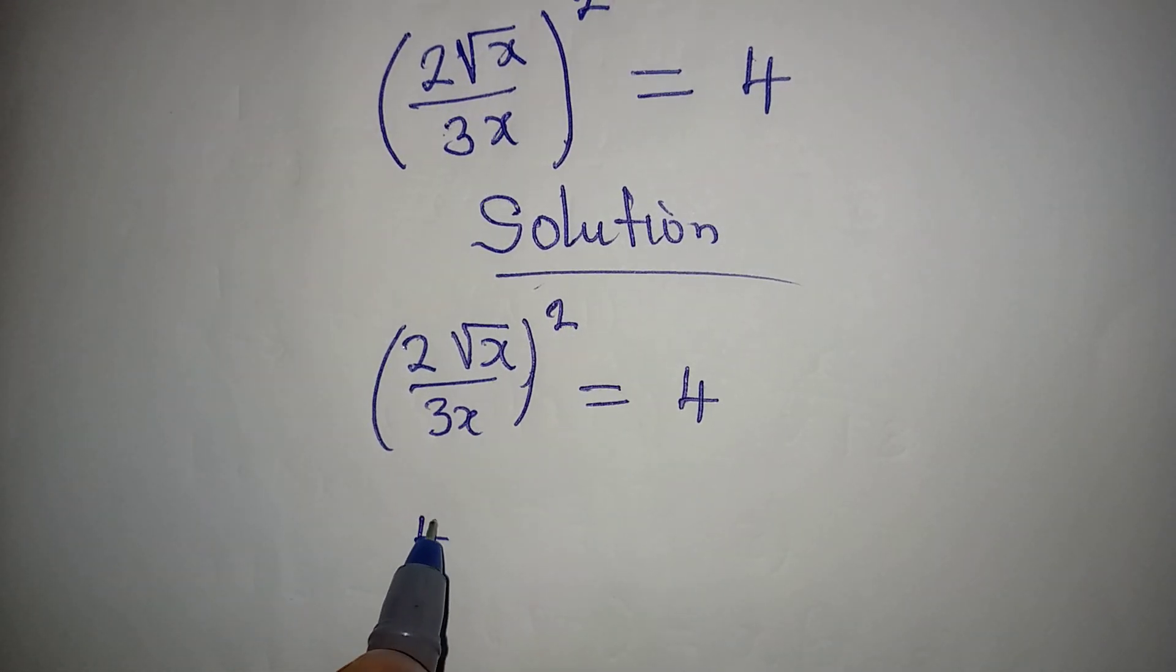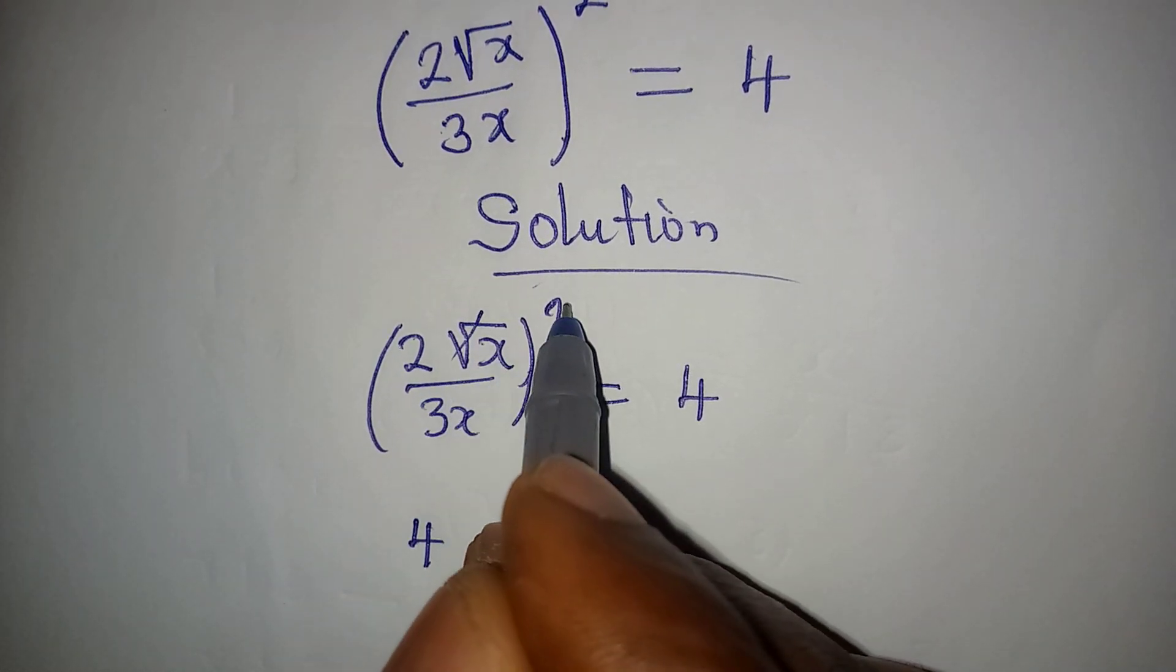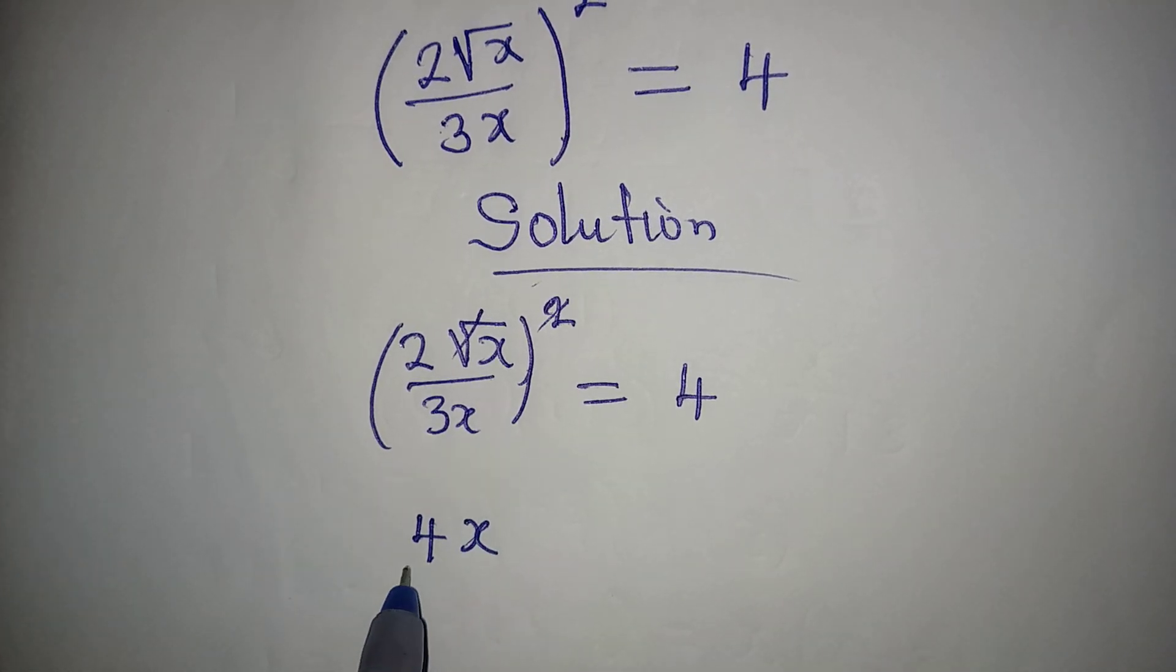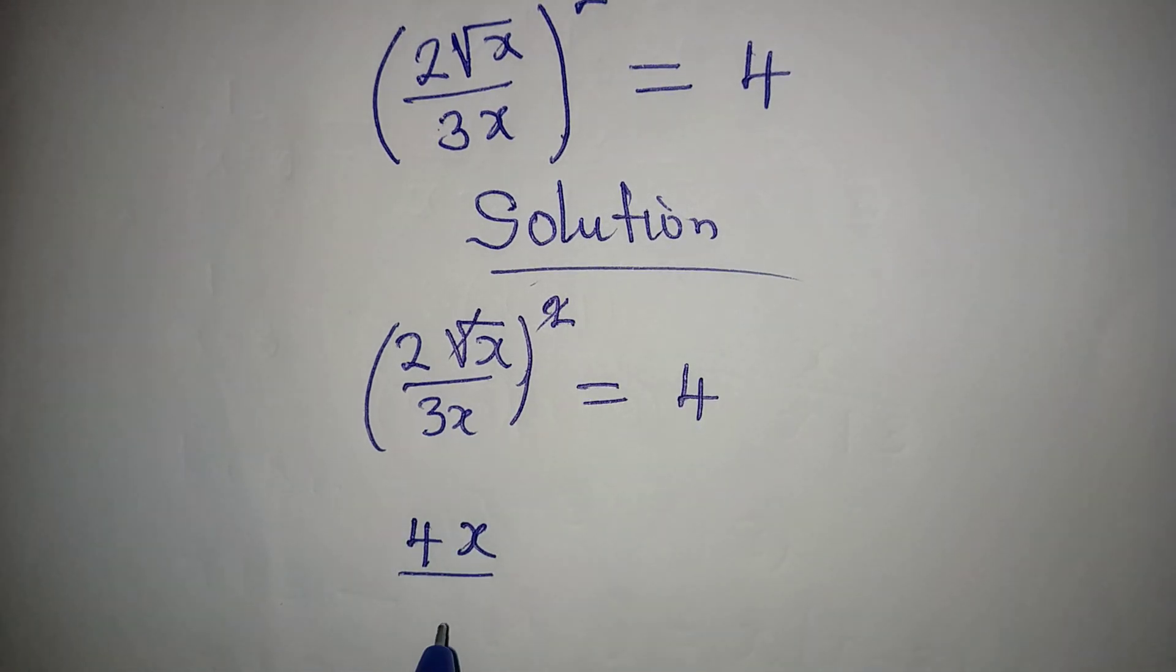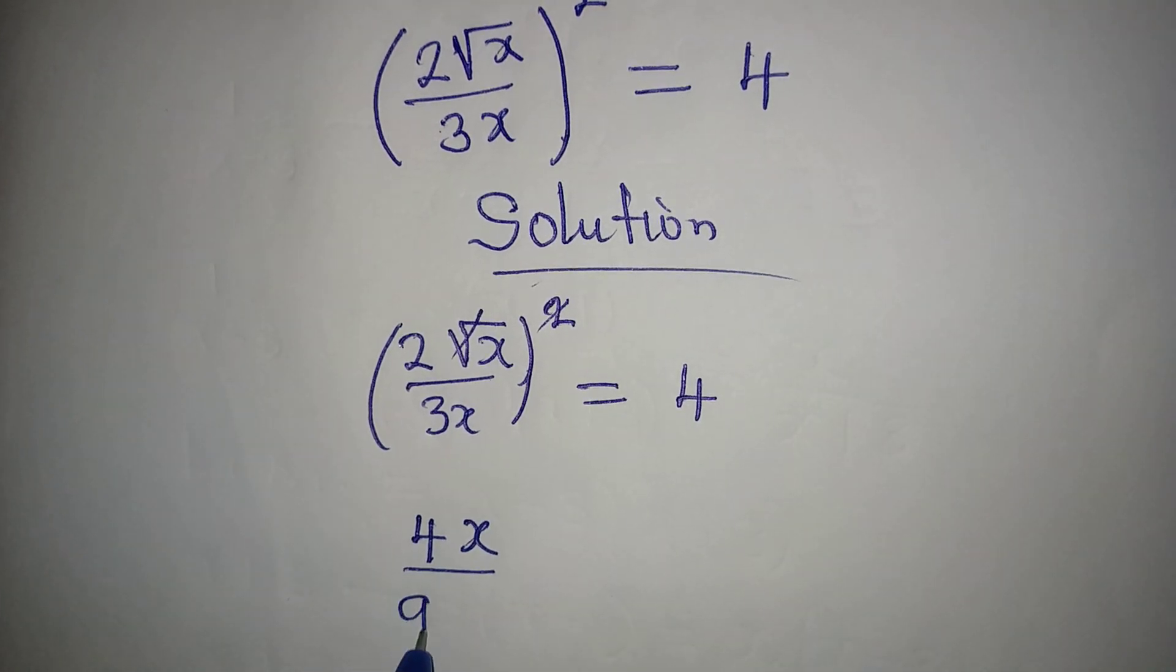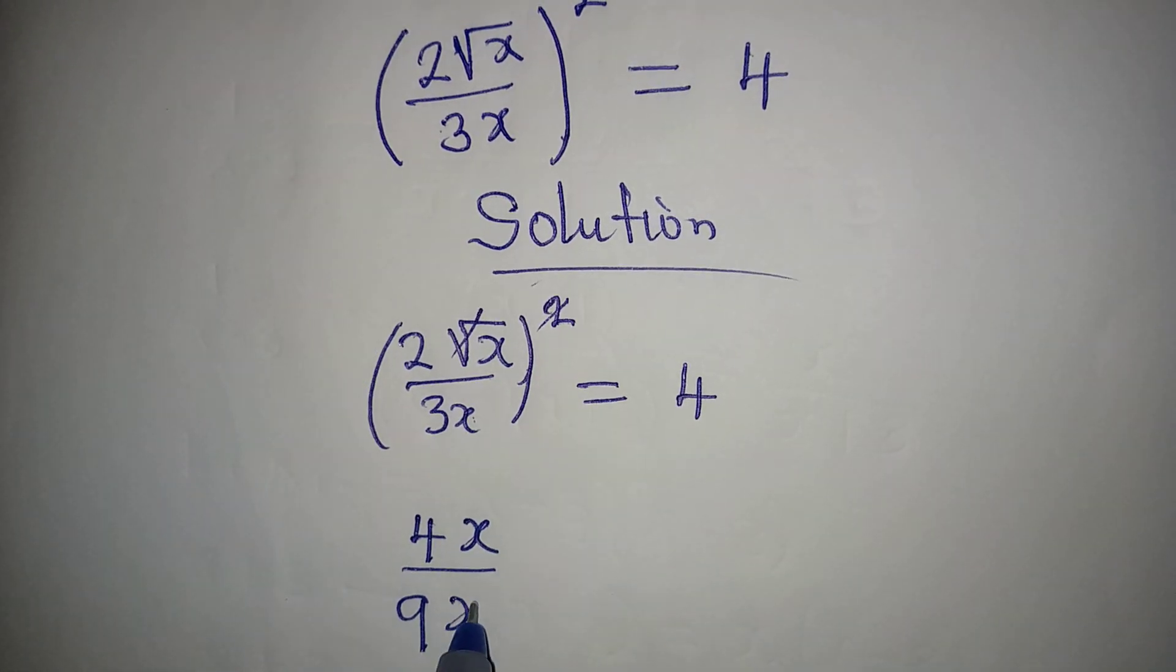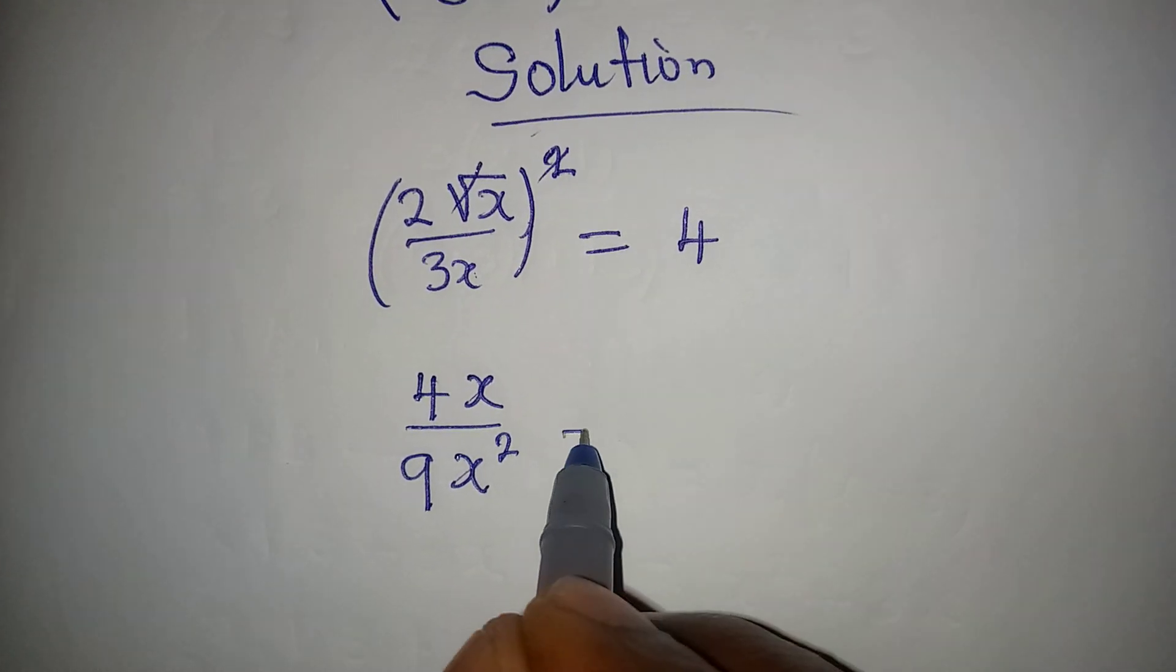Then this will go with this, so we have 4x over there, and 3 to the power of 2 will still give us 9, and x to the power of 2 will be down here as x². So we have (4x / 9x²) = 4.